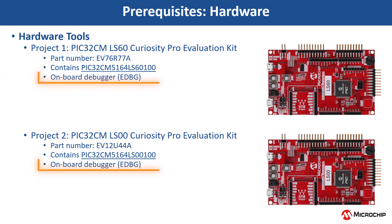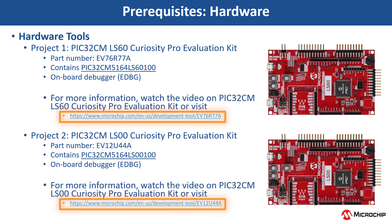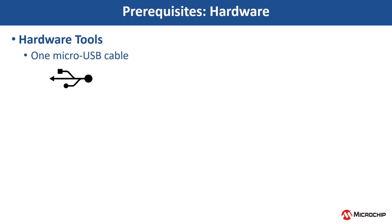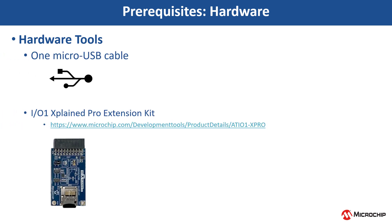Both these kits have an onboard EDBG debugger. For more information, watch these kit videos or visit the kit page. We also use a micro-USB cable and an IO1 Xplained Pro Extension Kit to test the extended functionality to read and print the current room temperature periodically.